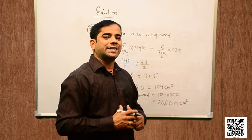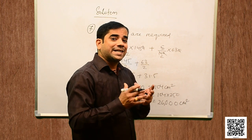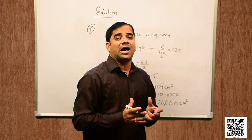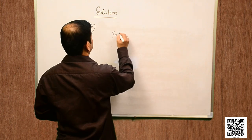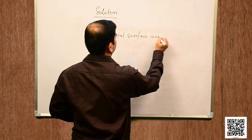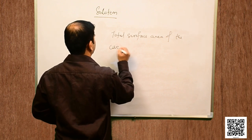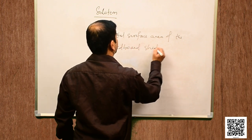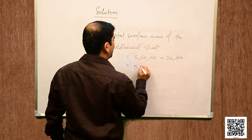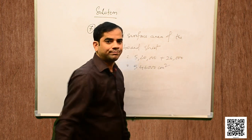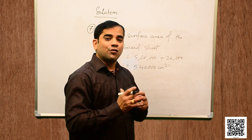We have found the total surface area of 250 boxes of each type and the extra overlapping area. The total surface area of the cardboard sheet is the sum of both areas: 5,20,000 + 26,000 = 5,46,000 cm². So 5,46,000 cm² of cardboard is needed to construct the 250 boxes of each type.